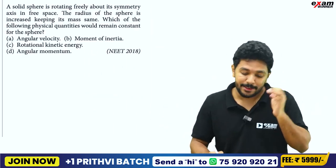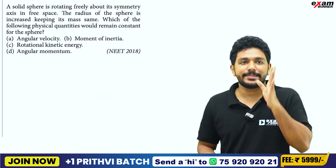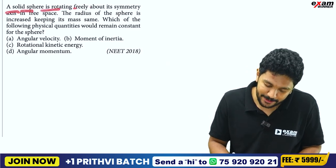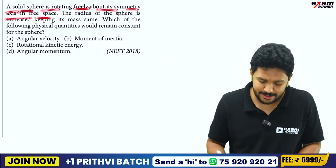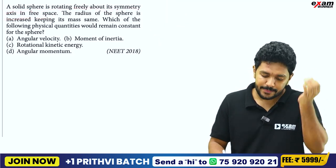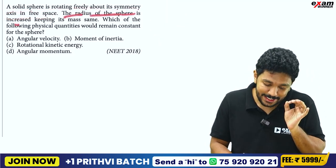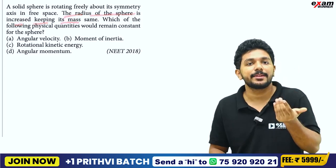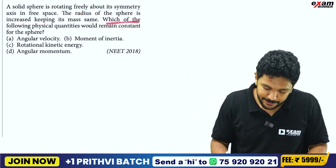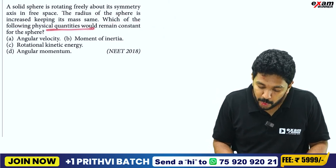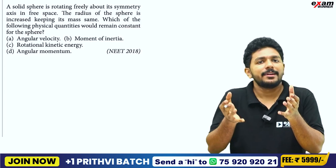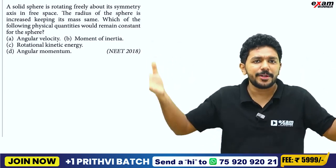I'm going to ask you a question from 2018. A solid sphere is rotating freely about its symmetry axis. The radius of the sphere is increased, keeping its mass the same. Which of the following quantities would remain constant for the sphere?